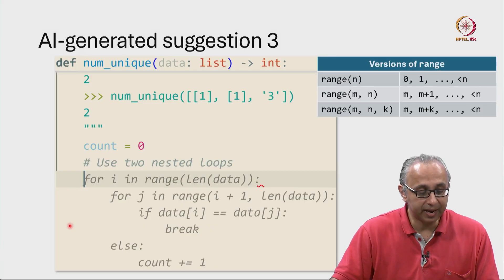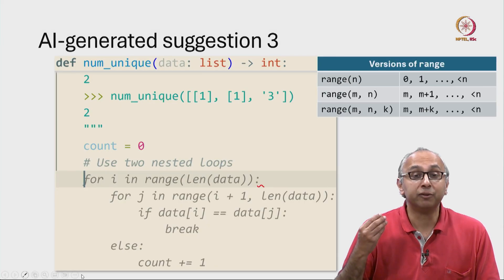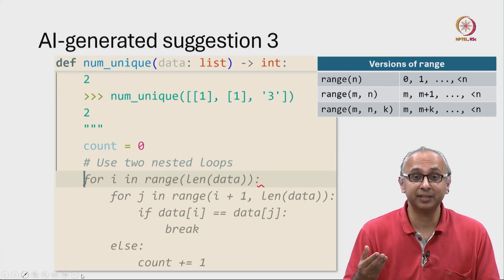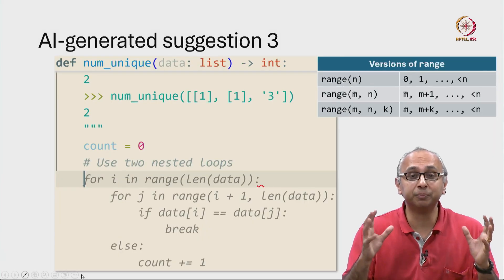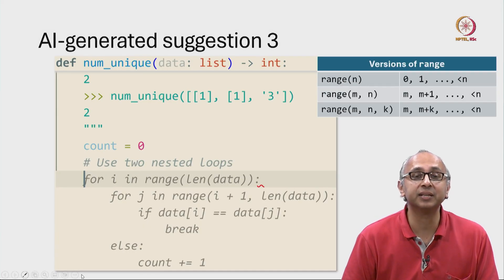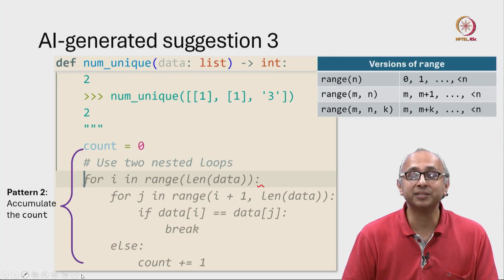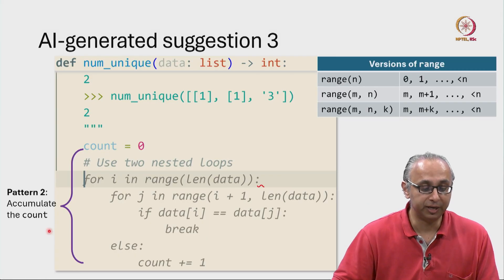And I can see that my AI has produced some rather complex code. Now we have learnt patterns to recognize and decompose complex code into more understandable parts. Let us use that skill as we try and understand this AI generated code. So firstly, you can very easily recognize the accumulator pattern for the outer for loop.